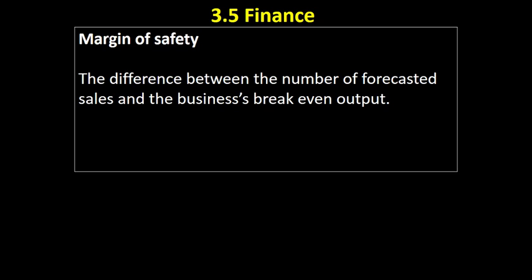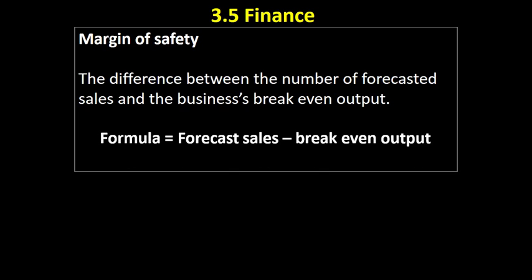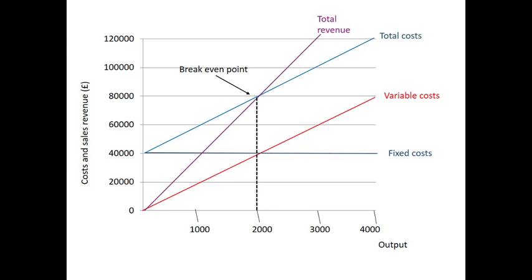Let's have a look at that here. Let's assume our break-even output, as we can see, is 2,000 units. Let's say we've done some market research and we think we're going to be able to sell 3,000 units.